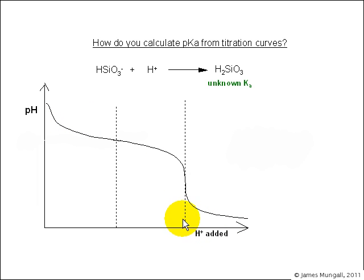The equivalence point can be clearly seen by the sharp drop in pH and I've put on there the half reaction point where half the H plus was added. At this point, the pH was 9.9.